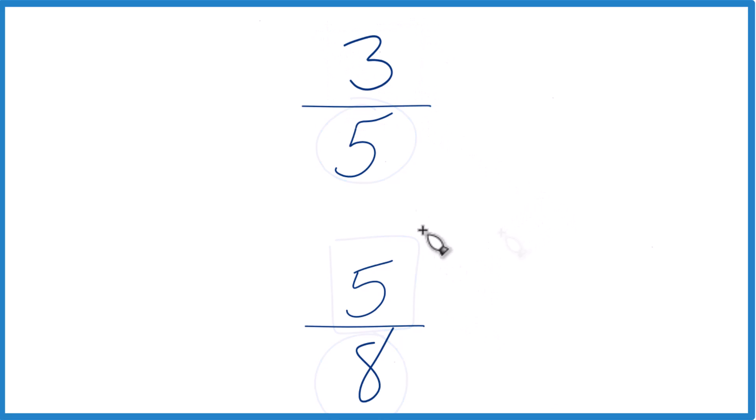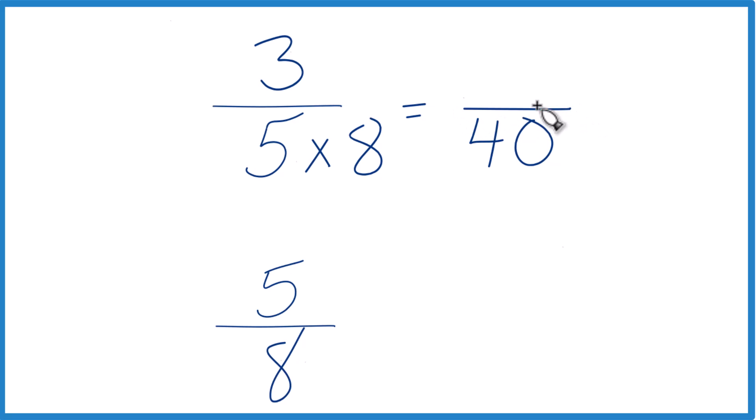Let's do that. So I'm just going to take 5 times 8, because 5 times 8 equals 40. And then down here I'm going to take 8 times 5, because 8 times 5 equals 40. And now we have the same denominator.